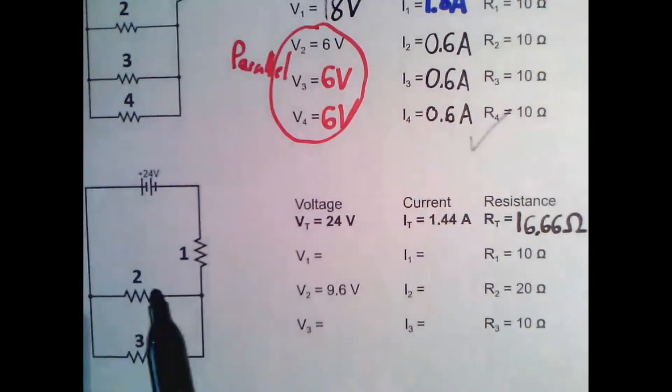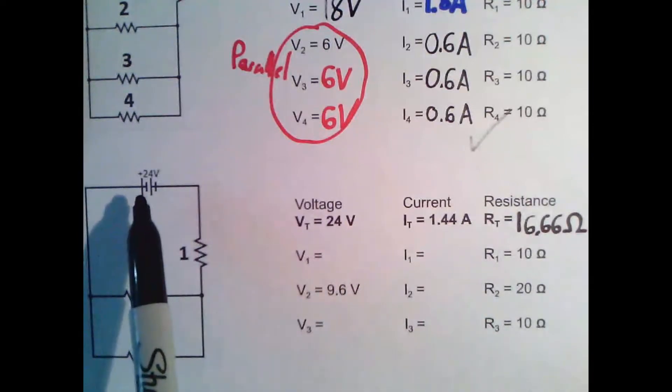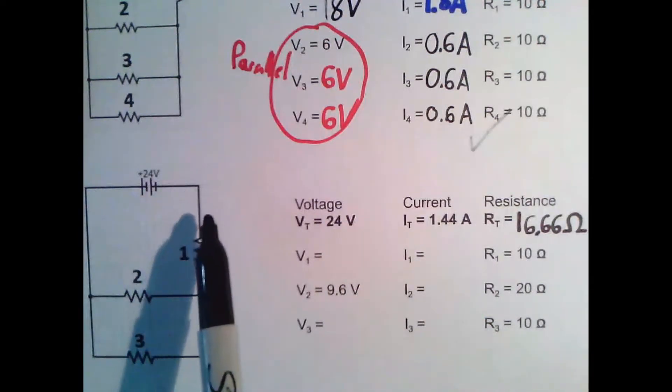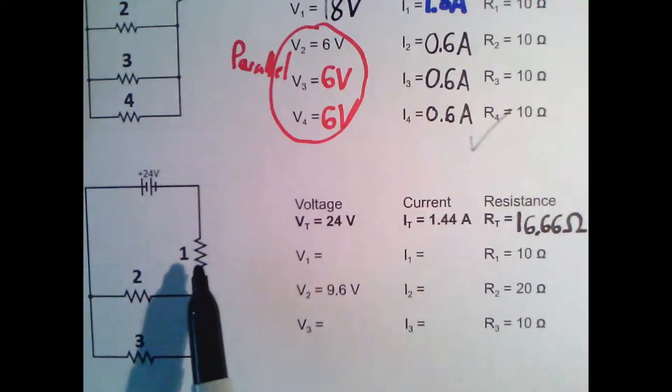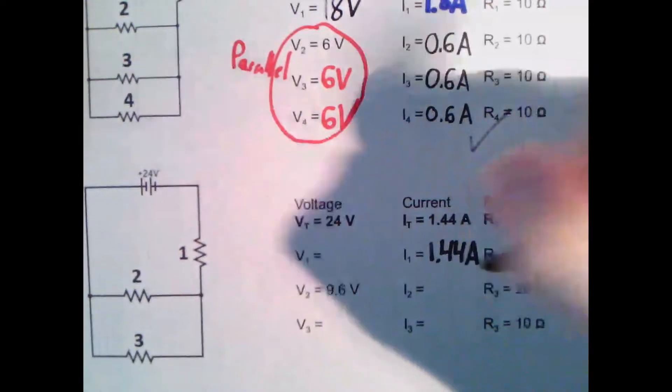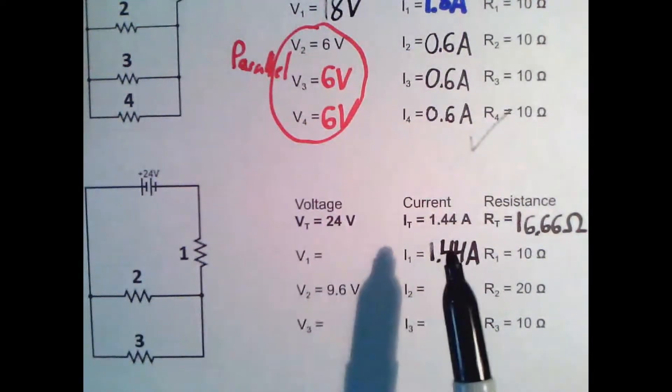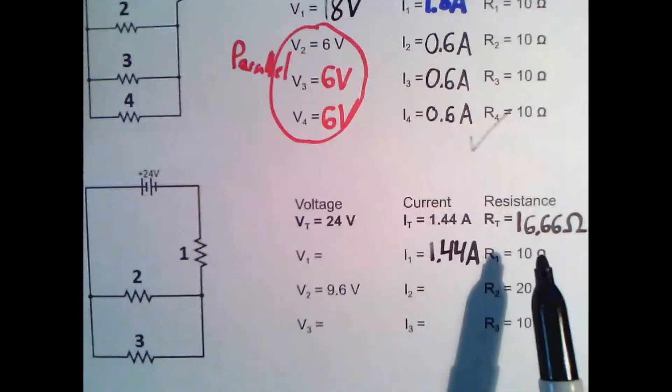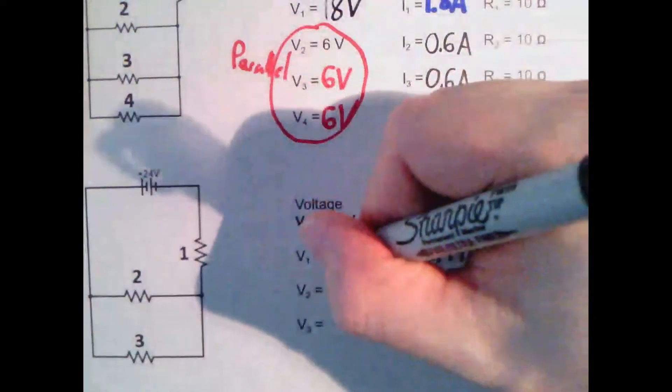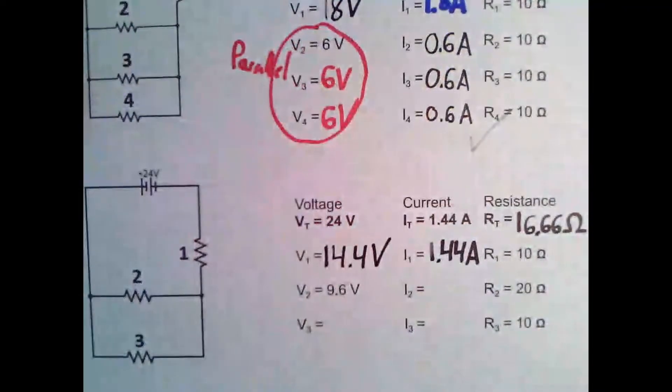And we've been asked again, what is the current going through here? So as you've discovered by now, if this is 1.44 amps, it makes sense that this is in series as well. So this would also be 1.44 amps. And that means we can find the voltage. So voltage is this multiplied by this. So this would be 14.4 volts.